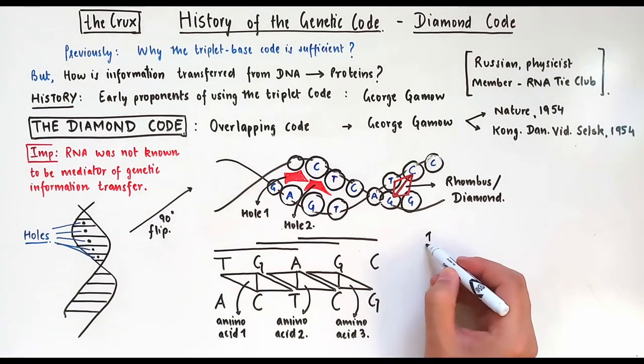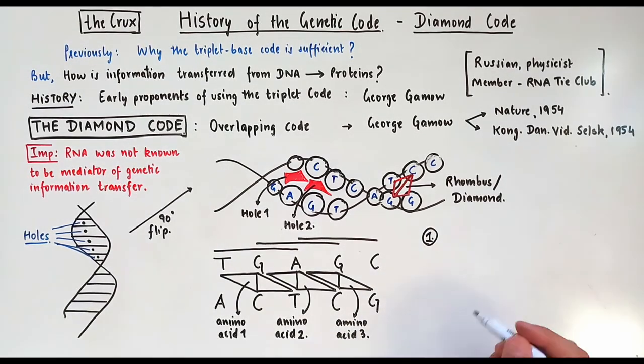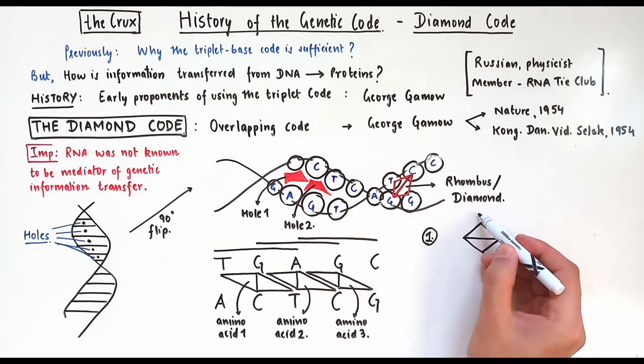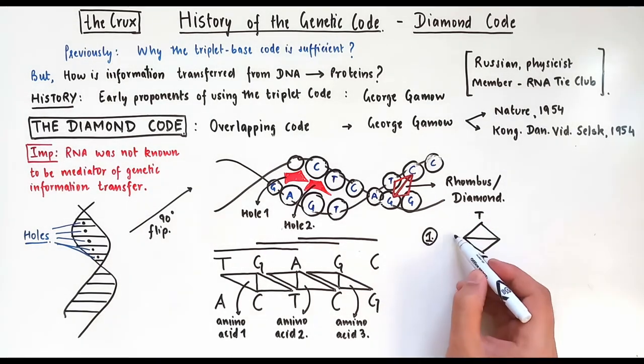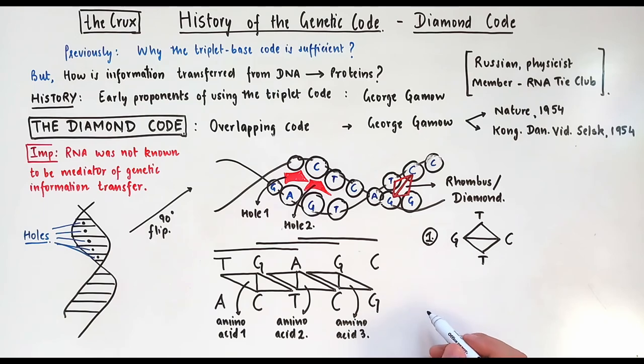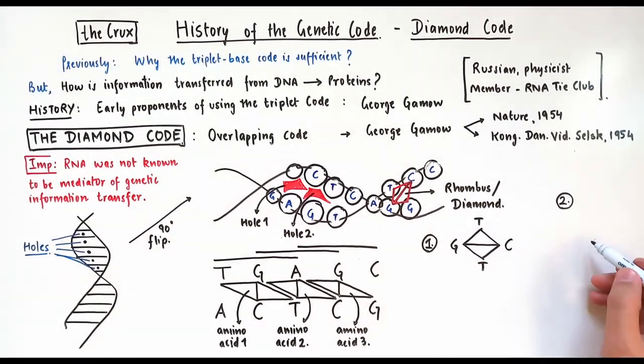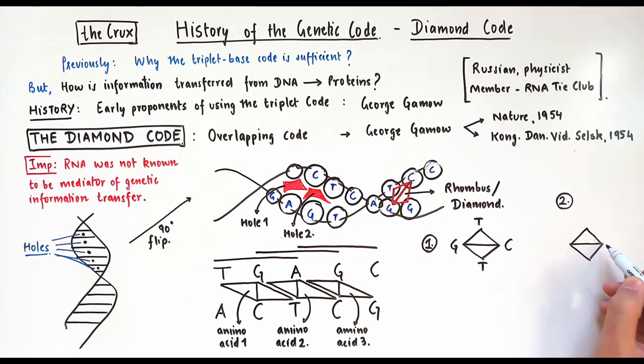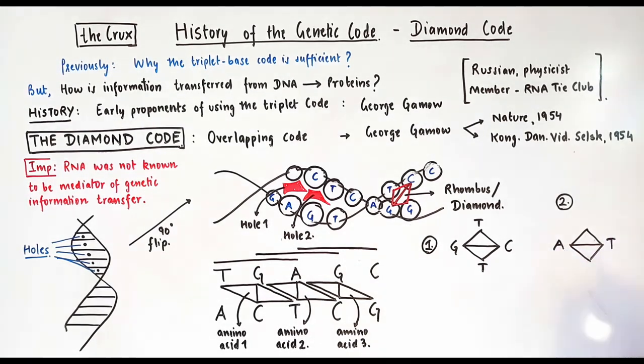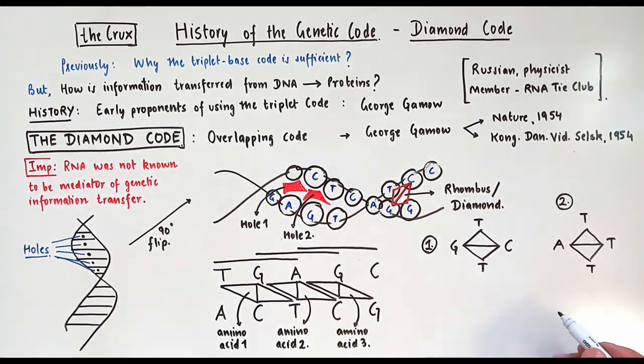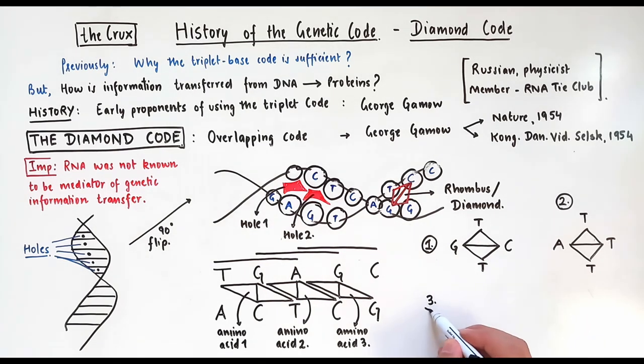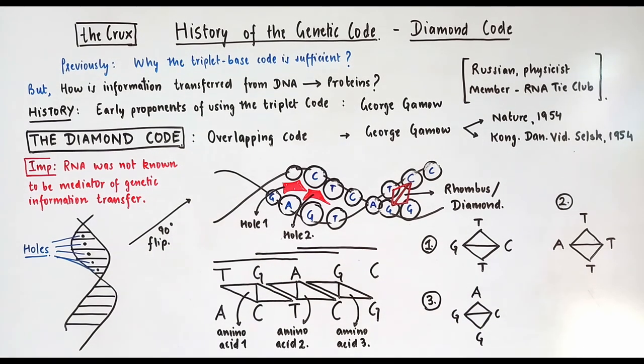George Gamow represented these codes in form of rhombus shapes, or diamonds as he saw them. So the first amino acid is specified by TGA, but in full disclosure, it is represented as this diamond, where the G and C on the horizontal axes are the base pairs, and the bases on the vertical axes are non-base pairs. So now we know how our three amino acids, shown here, can be written in the diamond code.